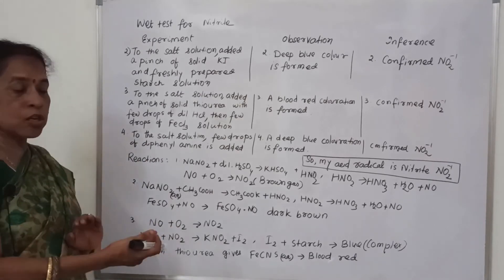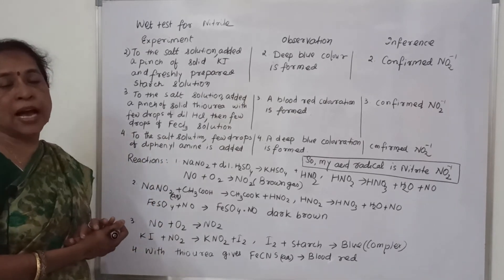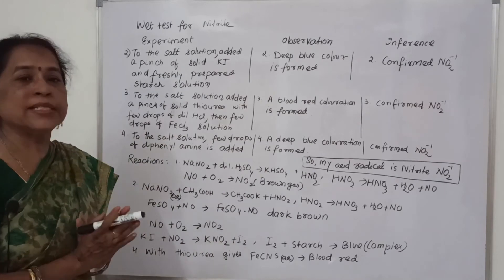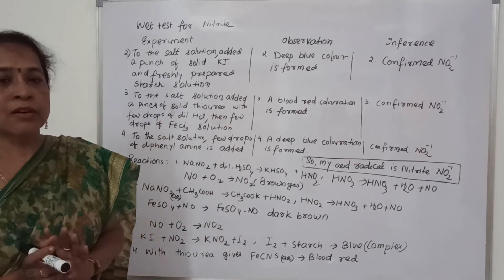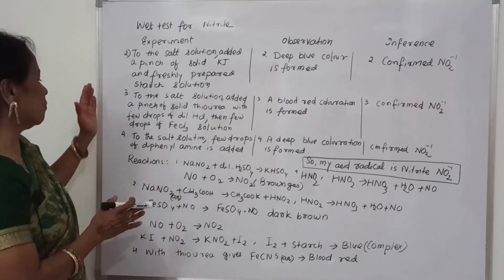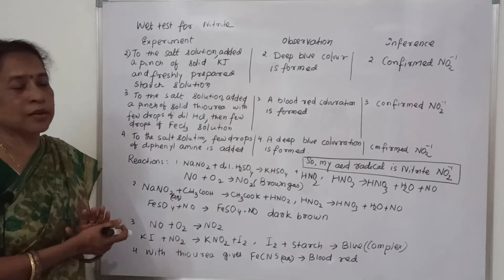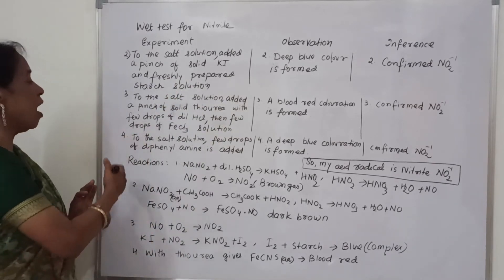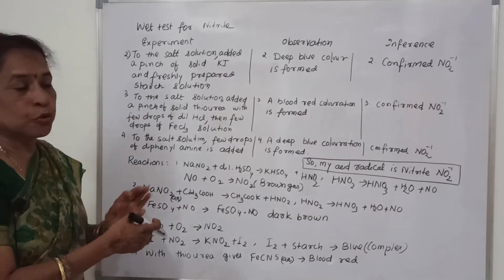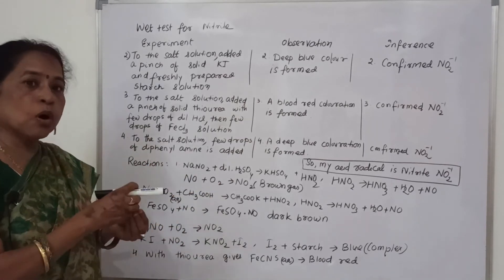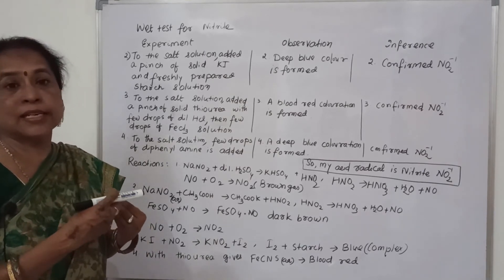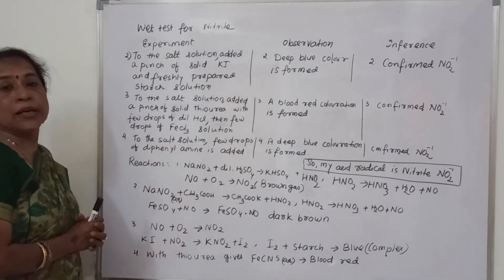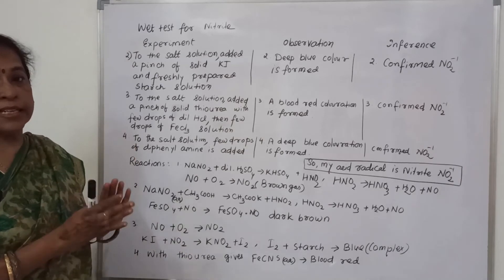For the fourth test, to the salt solution a few drops of diphenylamine are added, and a deep blue coloration is formed, which also indicates nitrite is confirmed. So, four confirmed tests have been done: first with ferrous sulfate, second with potassium iodide, third with thiourea, and fourth with diphenylamine.